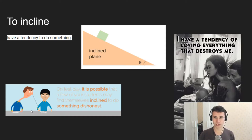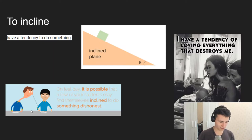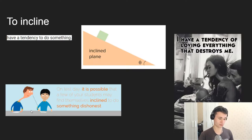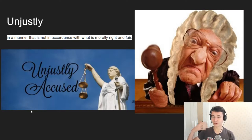For example: 'I have a tendency of loving everything that destroys me.' Or maybe a tendency to do something dishonest. And in this book we have the line: 'I'm inclined to reserve all judgments.' That means a reservation of judgments.